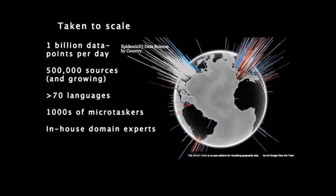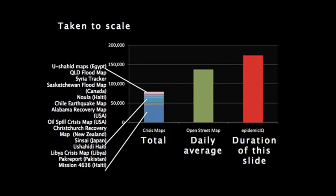We're processing about one billion data points per day from about half a million sources and growing, in more than 70 languages, utilizing thousands of micro-taskers. To get an idea of that scale, imagine every crisis map you've ever heard about — in the 15 seconds that you're looking at this slide, we're going to process twice as many reports. So this is big.